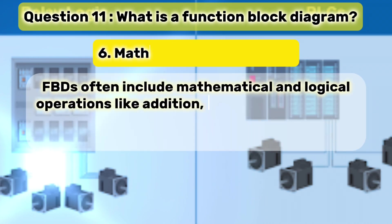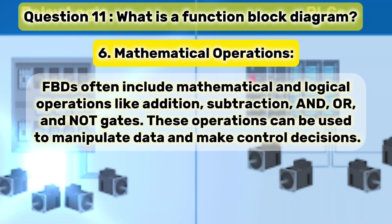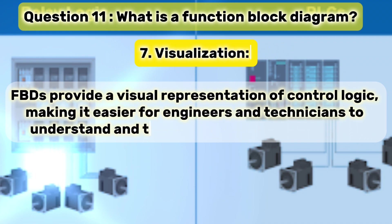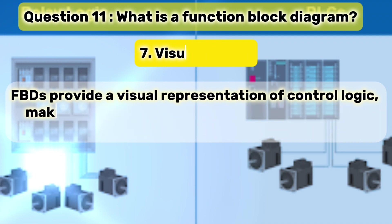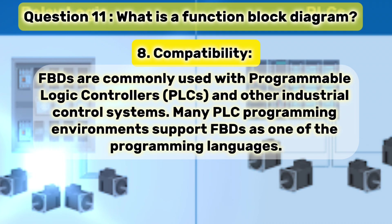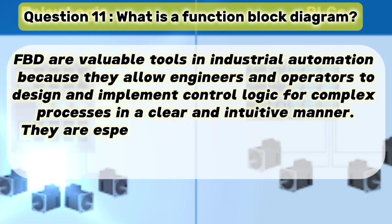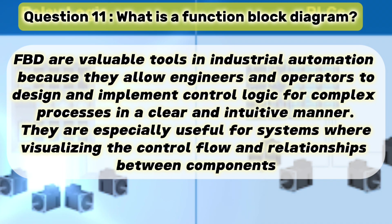Much like conditional statements in traditional programming. 6. Mathematical operations: FBDs often include mathematical and logical operations like addition, subtraction, and OR and NOT gates. These operations can be used to manipulate data and make control decisions. 7. Visualization: FBDs provide a visual representation of control logic, making it easier for engineers and technicians to understand and troubleshoot complex systems. 8. Compatibility: FBDs are commonly used with programmable logic controllers, PLCs, and other industrial control systems. Many PLC programming environments support FBDs as one of the programming languages. Function block diagrams are valuable tools in industrial automation because they allow engineers and operators to design and implement control logic for complex processes in a clear and intuitive manner.